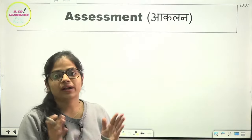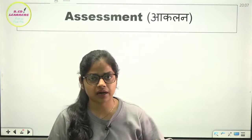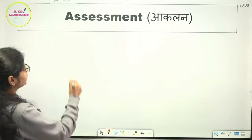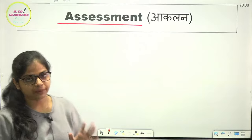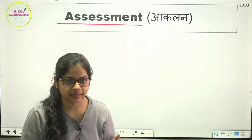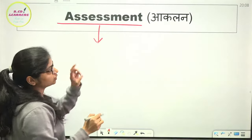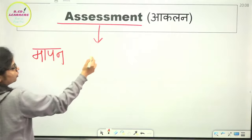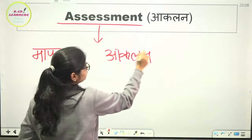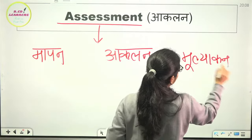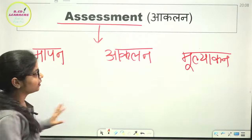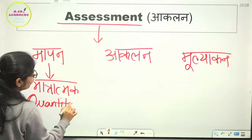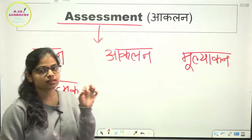Let's start the first session, which is on the second subject — Assessment for Learning, or Aaklan. You may have studied this a bit in first year as well and understood what assessment means. I am giving you a hint about assessment. There are three terms: the first is Maapan (measurement), the second is Aaklan (assessment), and the third is Muliankan (evaluation). This is a short session.